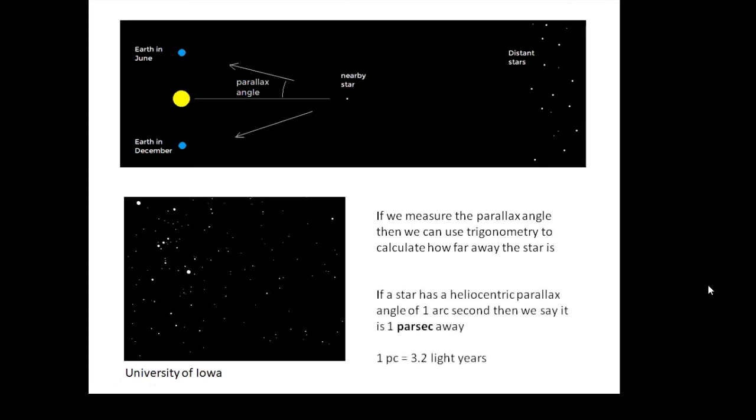Something that you need to know: how big is a parsec? Well, there's 360 degrees in a circle, and one degree is 60 minutes, and one minute is 60 seconds. So 60 arc seconds. Now one arc second therefore is a tiny angle. Now if a star has a parallax angle of one arc second, then we say it is one parsec away.